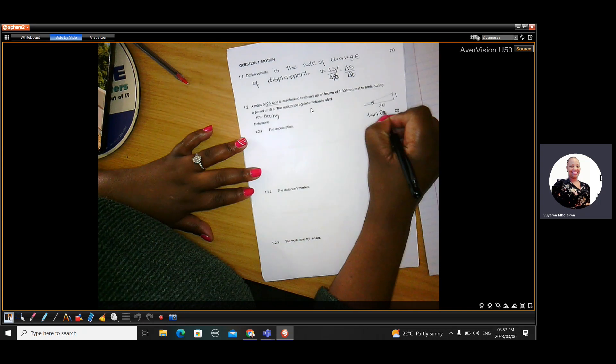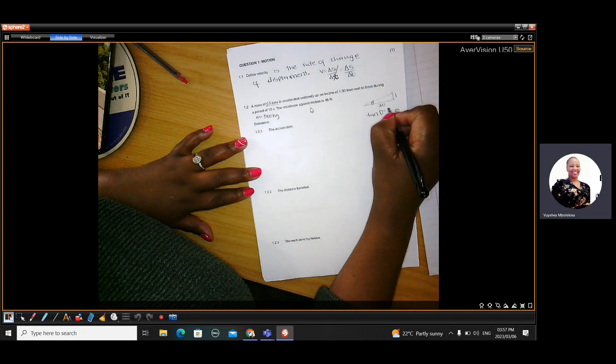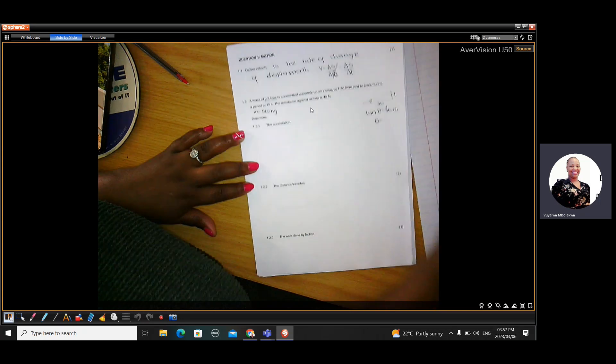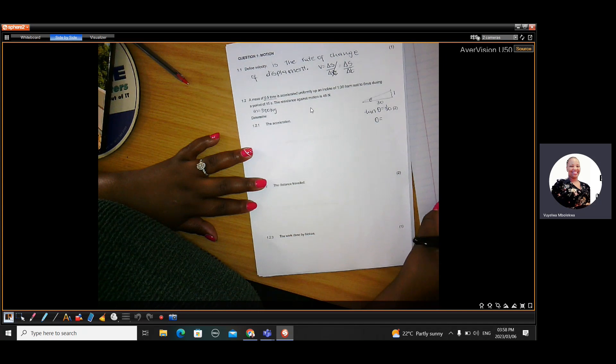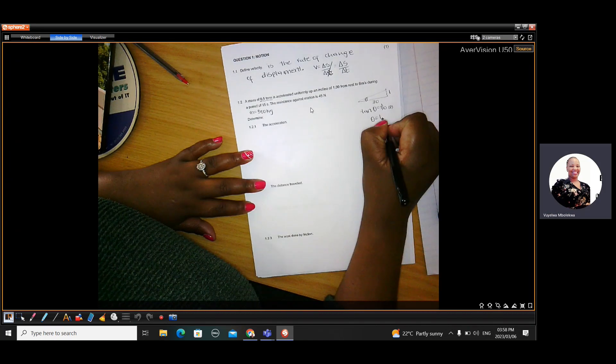Then theta here would have been second function, tan inverse, 1 over 30, which gave us 1.909 degrees.